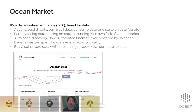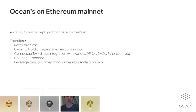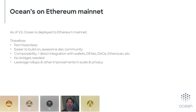Finally, Ocean is on Ethereum mainnet, which means it's permissionless. It's much easier to build on, there's a great dev community, great values — we've been close to that community since the beginning. It has excellent composability with direct integration with wallets, DEXes, DAOs, and Etherscan. In the past we had a bridge to our own PoA network, but now that Ocean is on Ethereum mainnet, no bridge is needed. And as the Ethereum ecosystem improves with ZK rollups, optimistic rollups, and more, we'll be able to take advantage of all of that.